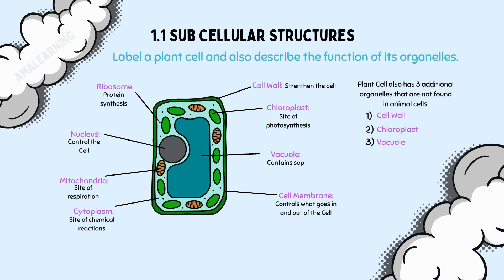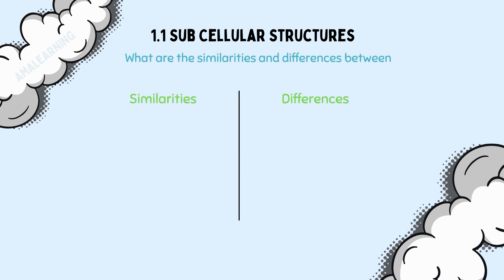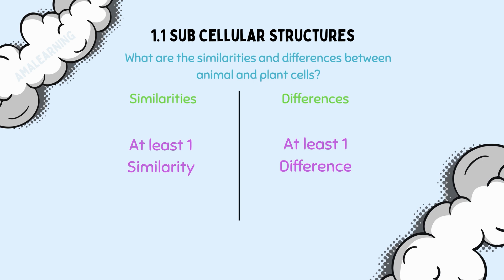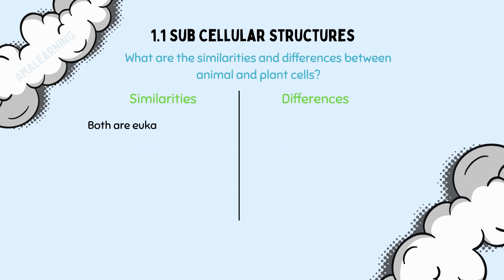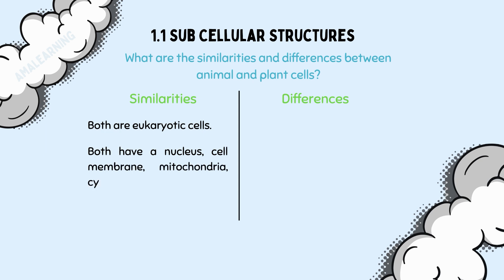Alongside questions where you'll be asked to label and describe the functions of organelles, you will be asked: what are the similarities and differences between animal and plant cells? The question might be worded in a straightforward manner, or they may ask you to compare and contrast, which means looking for the similarities and differences between two things. The answer must relate to both things mentioned in the question and must include at least one similarity and one difference. Correct answers for similarities include: they are both eukaryotic cells; or both have a nucleus, cell membrane, mitochondria, cytoplasm, and ribosomes.